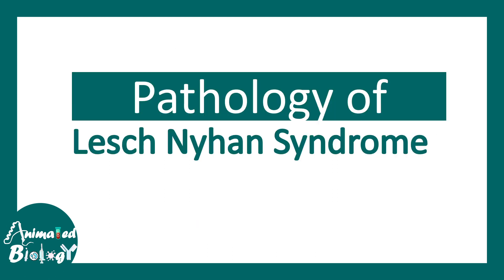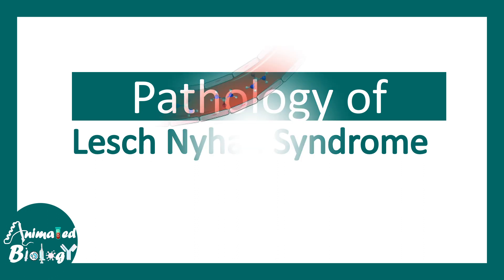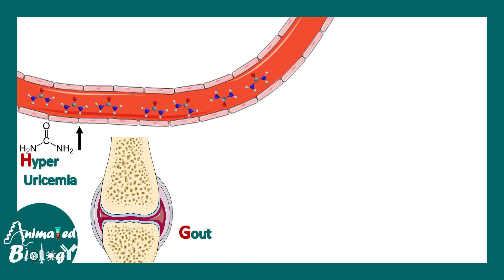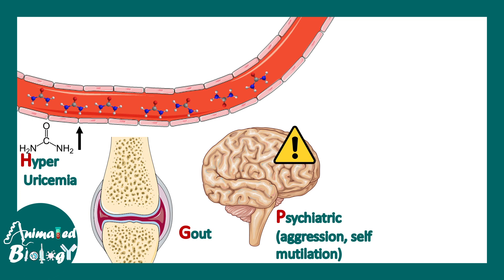Now let's understand the pathology of Lesch-Nyhan syndrome. The increased amount of uric acid formed in the tissues due to the faulty purine salvage pathway will enter the blood and cause hyperuricemia — that is increased uric acid in the blood. This increased circulating uric acid will get deposited in the joints as uric acid crystals and will cause gout.